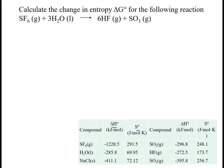We first have to calculate those quantities and then calculate delta G from the previous equation. Delta H° is products minus reactants, so it's going to be six times the delta H of formation of HF plus the delta H of formation of SO3, minus my reactants - the delta H of formation for SF6 plus three times the delta H of formation for water.